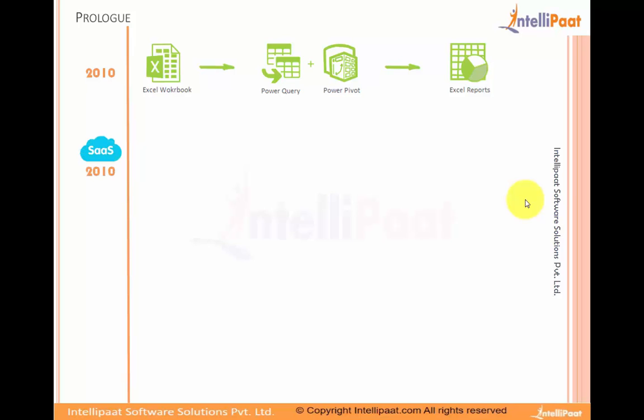It served the purpose at a certain level but had shortcomings like collaboration and publishing to a wide audience. That same year, Microsoft started cloud initiatives and released applications like Azure, and a year later, Office 365. This was the time where SaaS — software as a service — was getting popular.